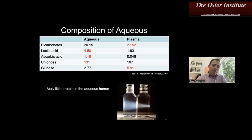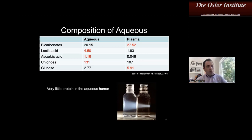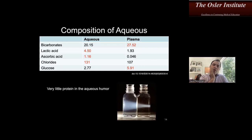For aqueous humor composition, you might wonder if you really need to memorize exact values like 20.15 and 27.52 to pass the boards. No, you don't. But they could ask about relative differences — what makes aqueous unique compared to plasma. There's a way to look at this and make it make sense without memorizing everything. Think about what we know about lens metabolism in the eye.